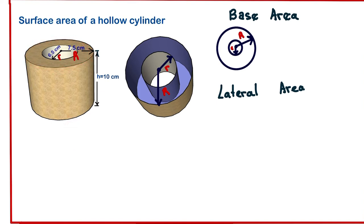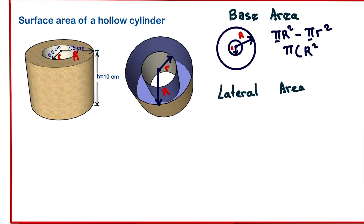We have two radii: the radius of the external circle and the radius of the internal circle. The area of a circle is π r squared, so the base area will be π R squared minus π r squared — that is, the external circle minus the internal circle. If we factorize, we get π(R squared minus r squared).